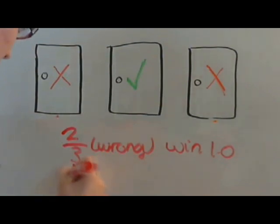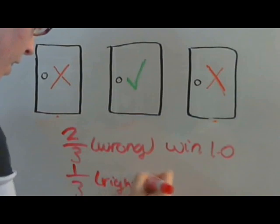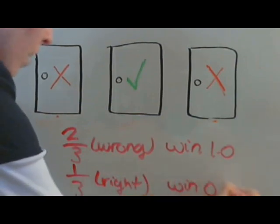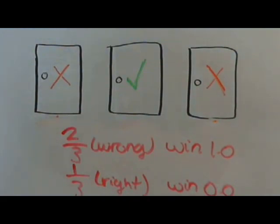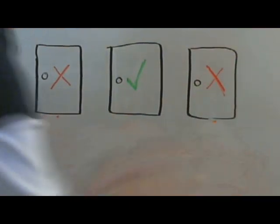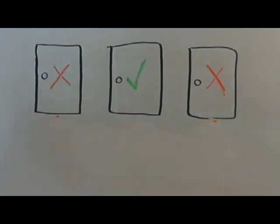In the other case, of course, where you were right with a lucky guess, you will win zero times if you switch. This means you are two-thirds more likely to win in the Monty Hall problem if you switch than if you don't. And that really is the Monty Hall problem in a nutshell.